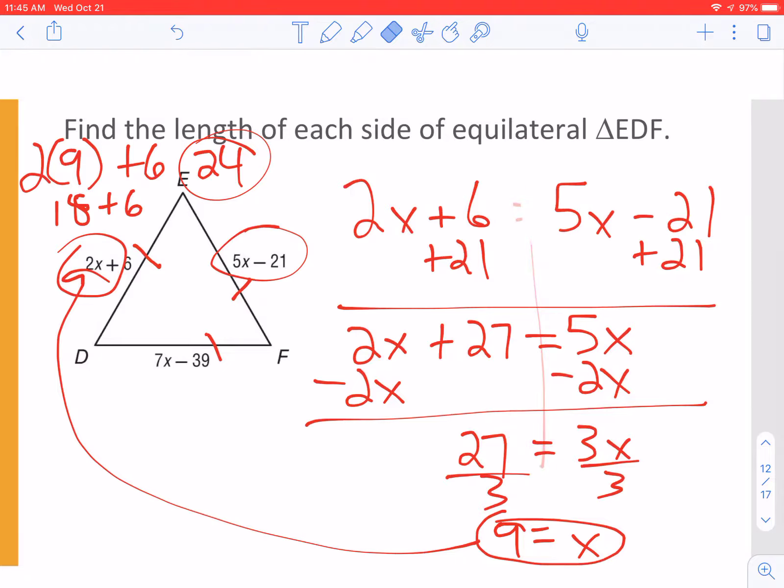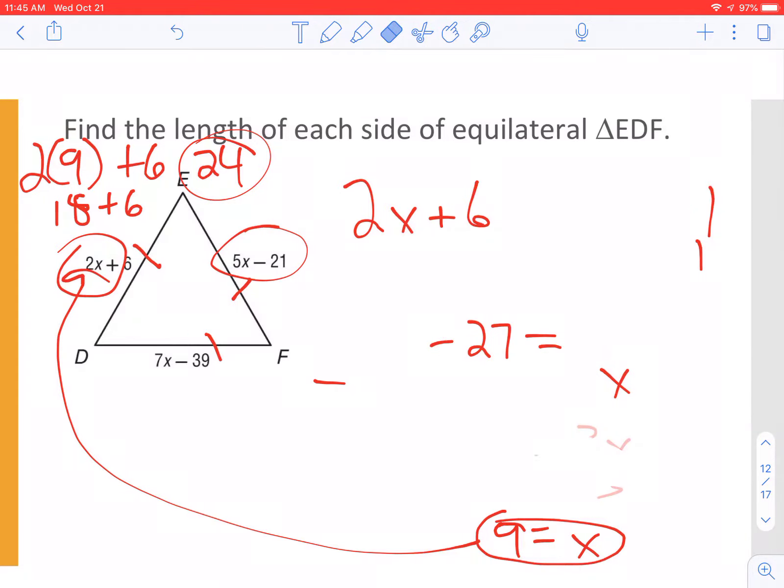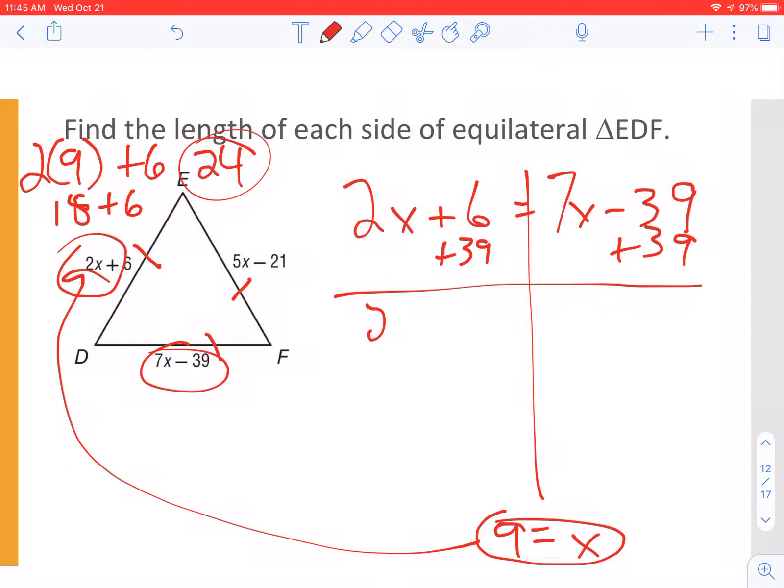Just to prove it to you, I'm going to set up this problem with different numbers and let's see if we still get 9. 2X plus 6 will now equal 7X minus 39. So I'm going to add 39. I'm going to get 2X plus 45 equals 7X. Now I got to get all the X's over so subtract 2X. 45 equals 5X. Divide both sides by 5 and you'll get X equals 9 again. Plug it back in and you will get 24.